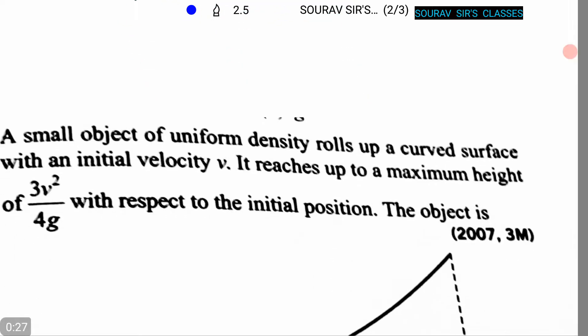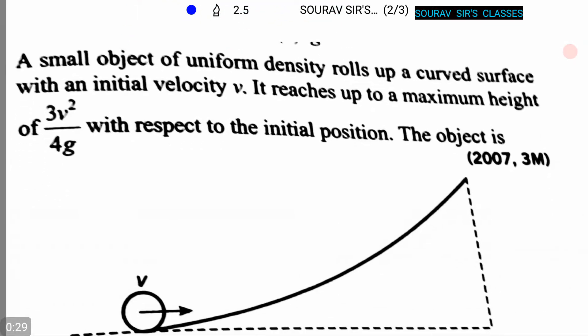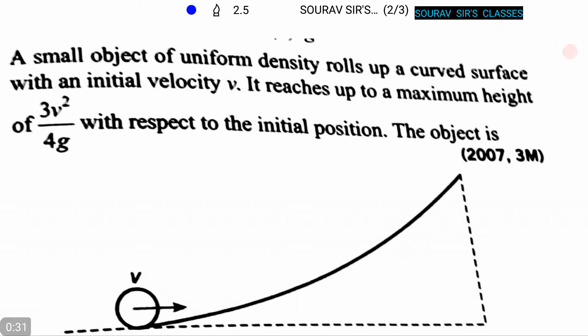The question is: A small object of uniform density rolls up a curved surface with an initial velocity V. It reaches up to a maximum height of 3v²/4g with respect to the initial position. The object is...